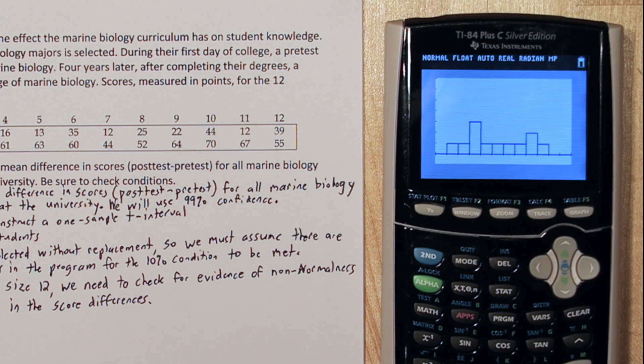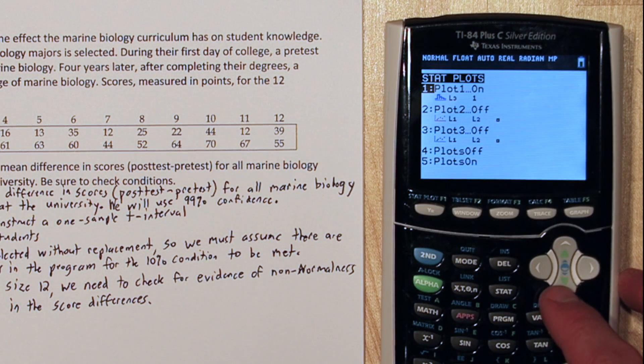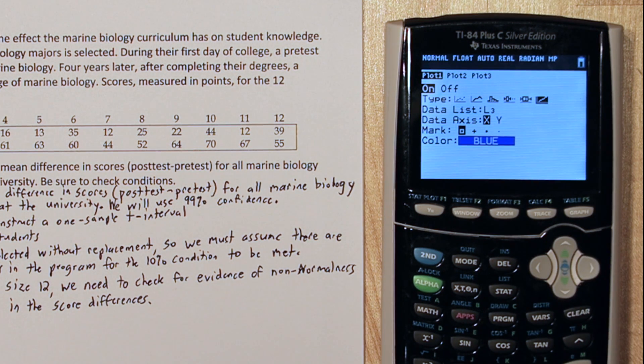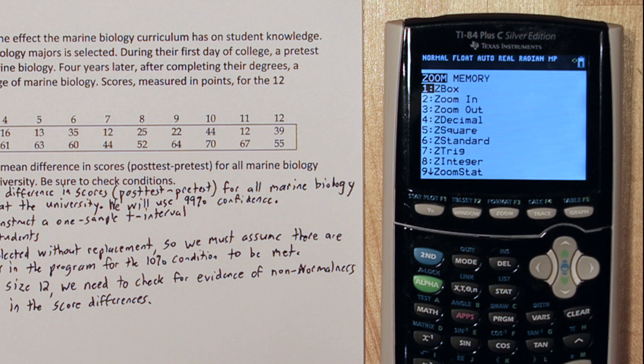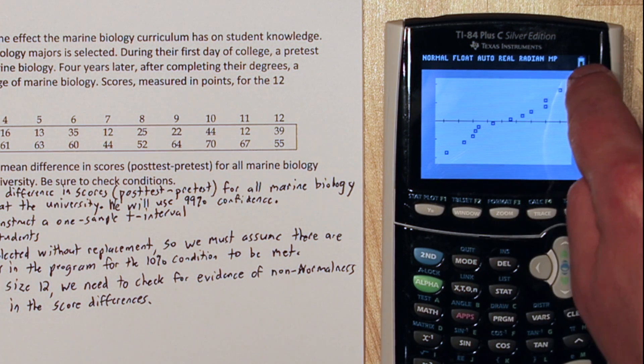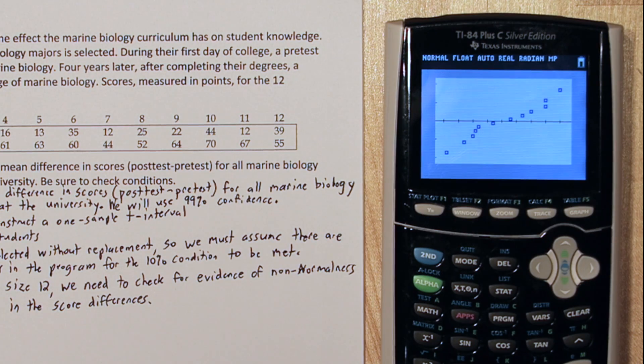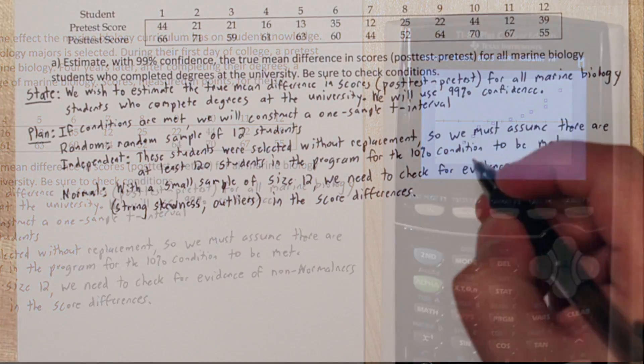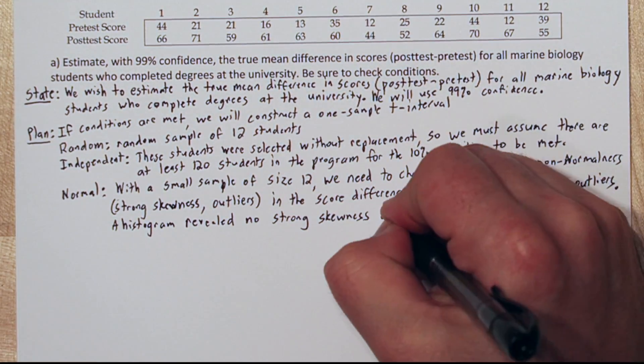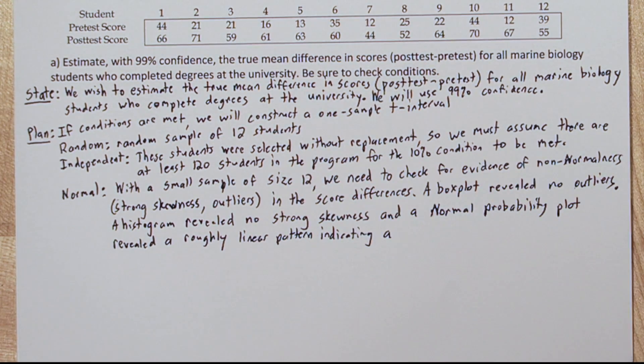Let's do one final check. If you press 2nd and y equals one more time, press enter on plot 1, and choose the very last option. This is a normal probability plot. When you press zoom 9, you're going to see this. As long as these dots appear in roughly a linear form, then we have roughly normally distributed data. So, all that checks out. There's not non-normalness here. So, I think it's safe to use t-procedures.